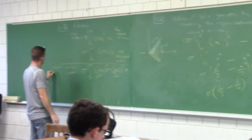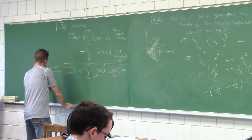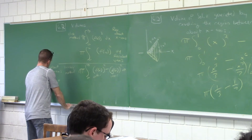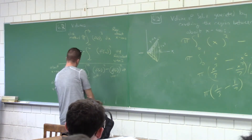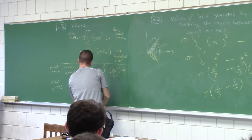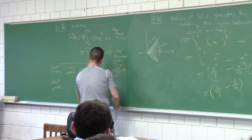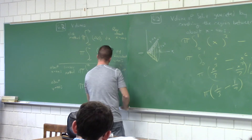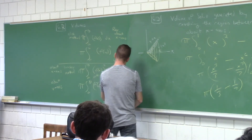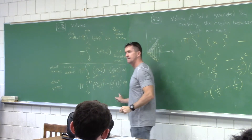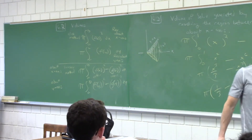What would be the formula about the y-axis for the washer method? Same thing, but just change this to what? Function in terms of y. And function in terms of y. dy, right?